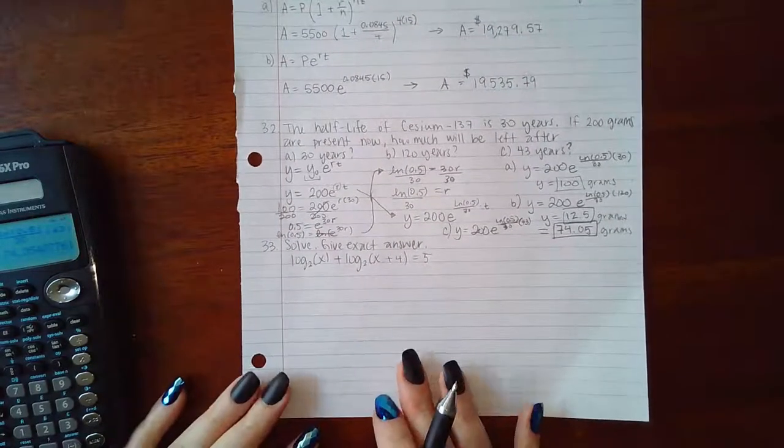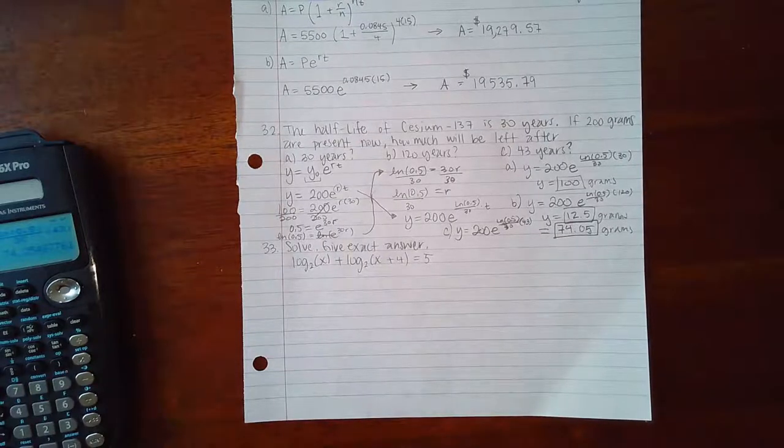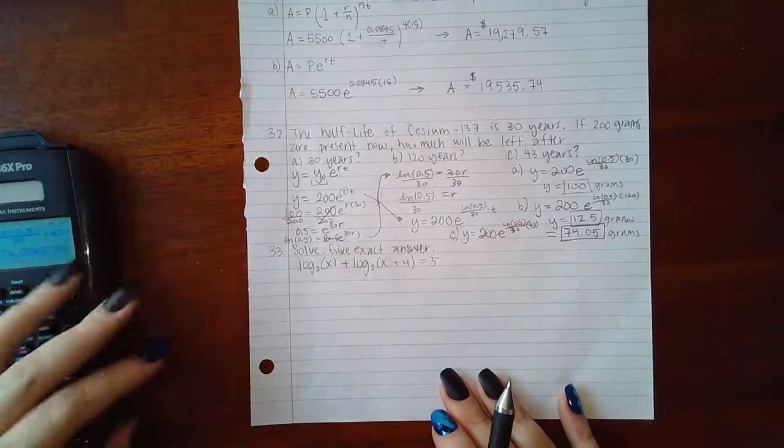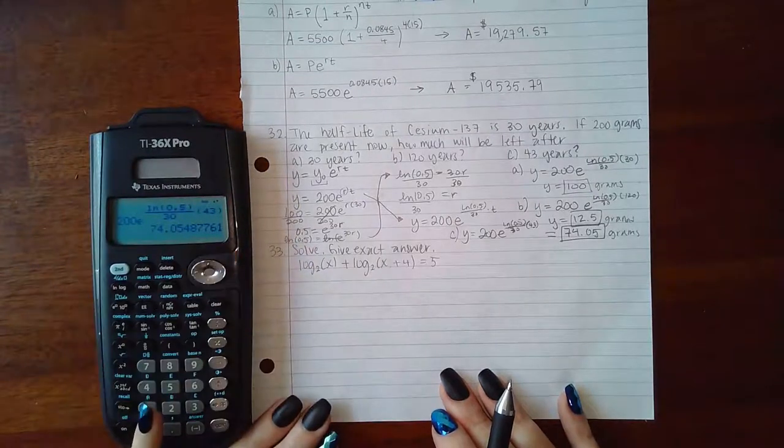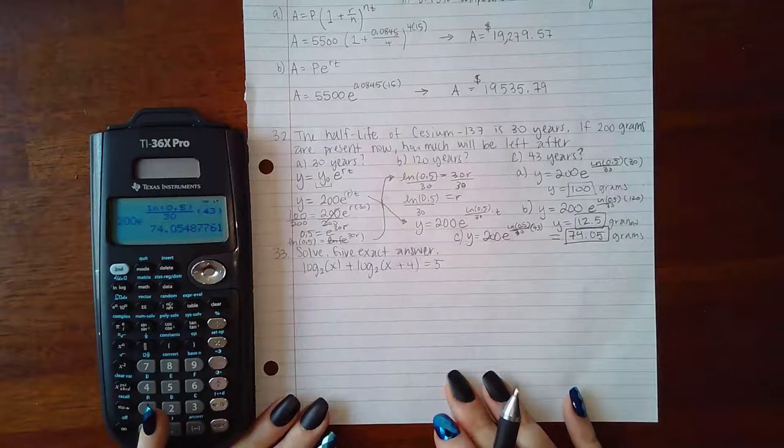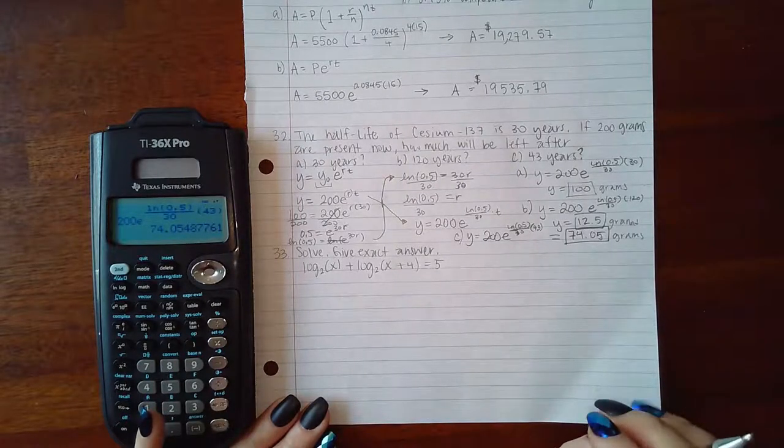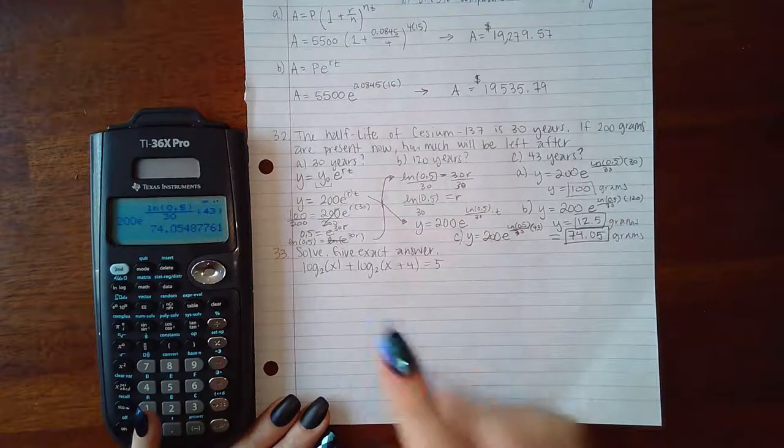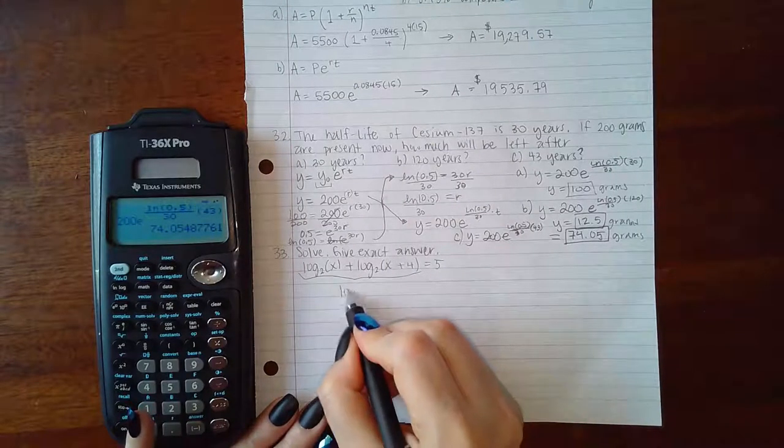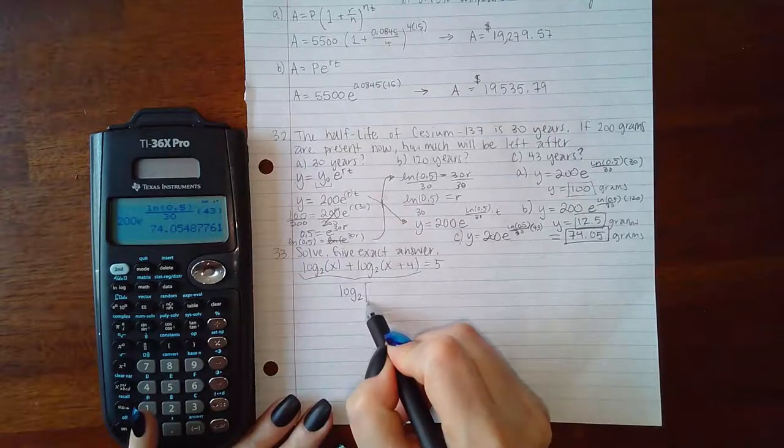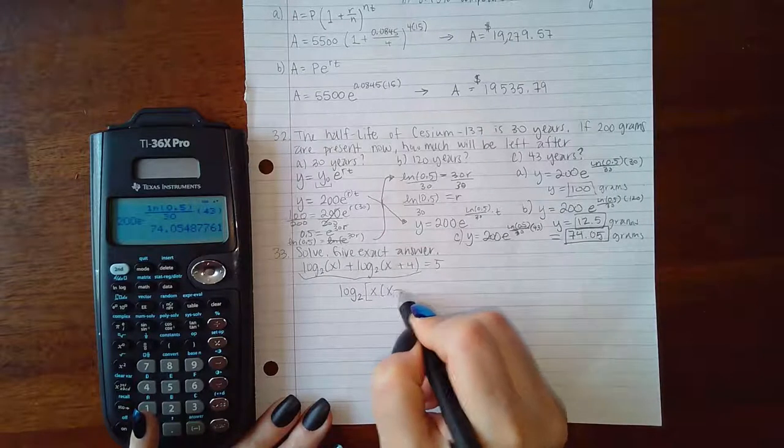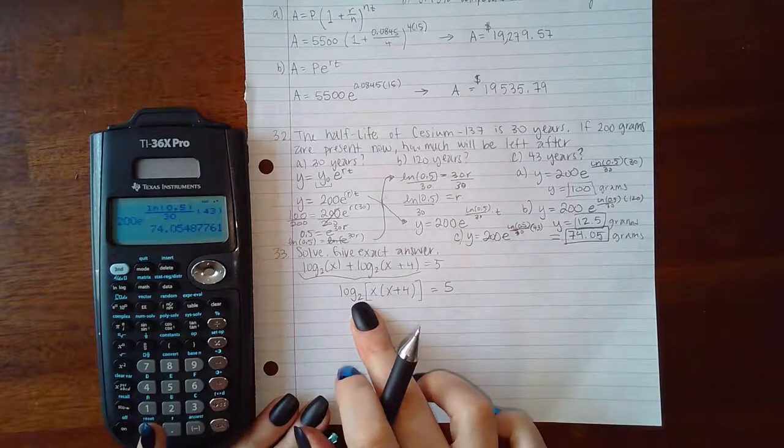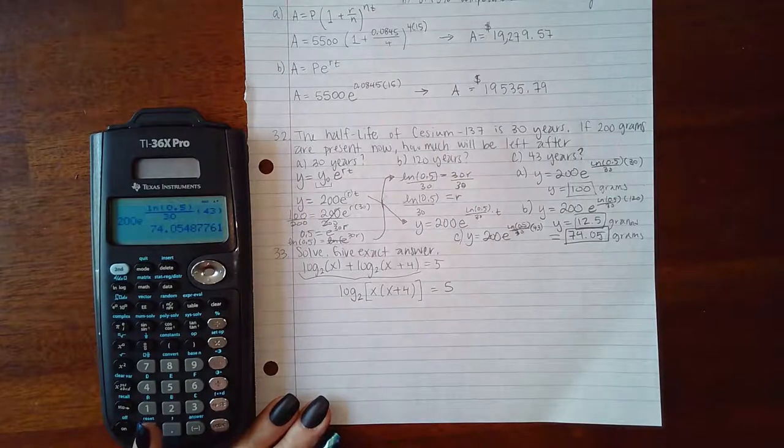Now number 33 says to solve this equation and give an exact answer. You can get rid of logs using the inverse of a log, which is an exponential. However, that method cannot be applied until you only have one logarithm on each side, or no more than one logarithm on each side. This side doesn't have a logarithm and that's okay, but on this side I do, so I need to combine these two into one single logarithm. The property we have to use to do that is the sum property, which means I'm going to take this argument and multiply it by that argument.